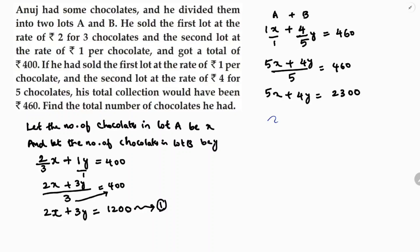Now we need to simplify these two equations. The first equation is 2x + 3y = 1200, and the second equation is 5x + 4y = 2300. Just to recap: lot A has X chocolates at price 2/3 each, and lot B has Y chocolates. In the second condition, lot A is at Rs. 1 each and lot B is at 4/5 each, since Rs. 4 for 5 chocolates gives price 4 by 5.